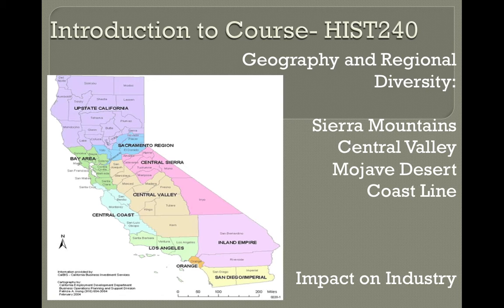Thirdly, since time immemorial, the snow-capped mountains of the Sierras have been a source of countless rivers, streams, and lakes. Most importantly, it has provided water and irrigation for the Central Valley.